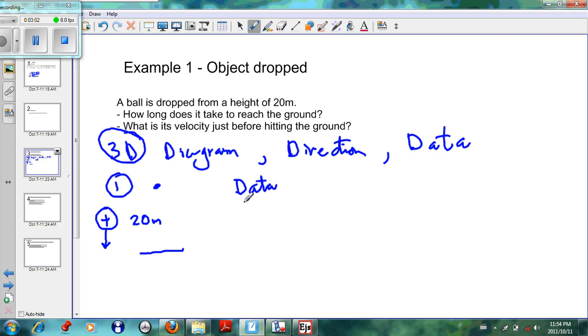The ball is dropped from 20 meters. If we write our data, we have an initial velocity - the ball is being dropped, so the initial velocity is zero meters per second. The delta x is given as 20 meters, and the acceleration due to gravity is given as 9.8 meters per second squared.